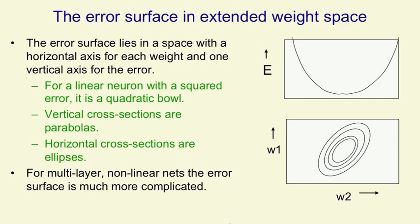For a linear neuron, the errors that you make for each set of weights define an error surface, and this error surface is a quadratic bowl. That is, if you take a vertical cross-section, it's always a parabola, and if you take a horizontal cross-section, it's always an ellipse.